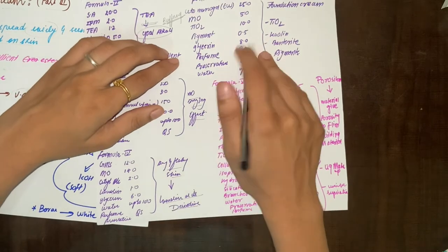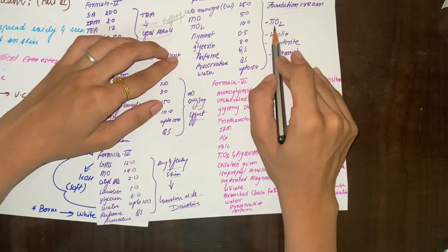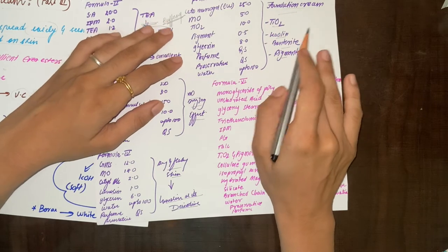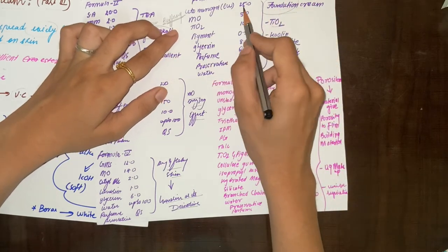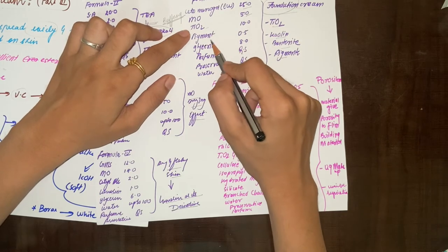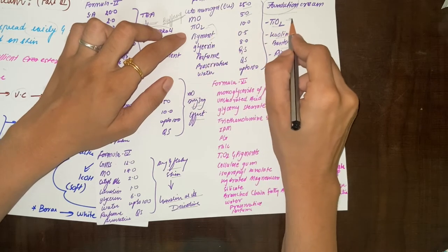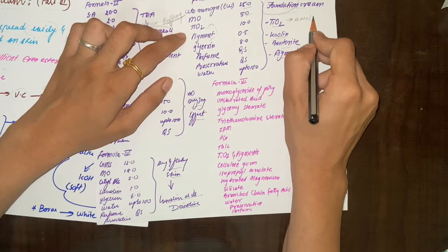Now formula fifth - this is for foundation cream, which means we have color cosmetics. The vanishing cream base will also be used in foundation cream. Here you can see which ingredients we generally use: TiO2, kaolin, bentonite, and pigments. TiO2 will provide a base as an opacifier which will show our pigments in a good way. Similar function is kaolin and bentonite.